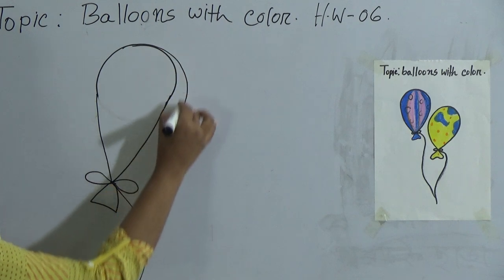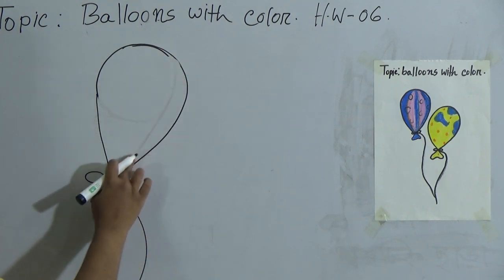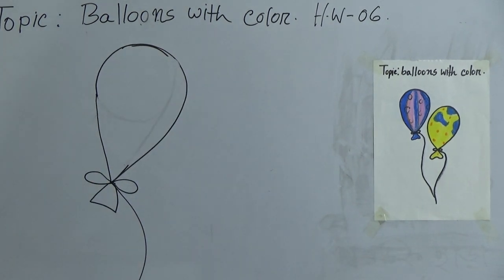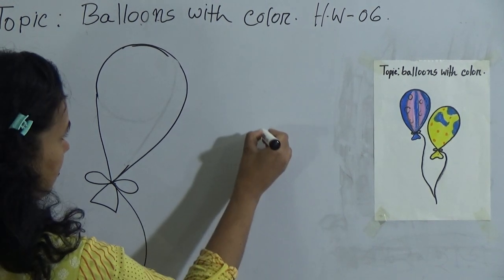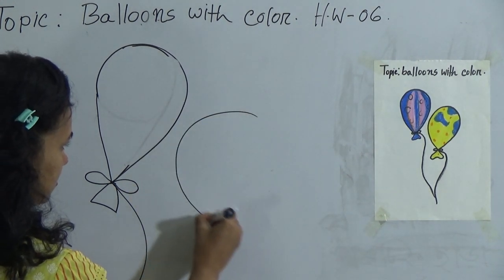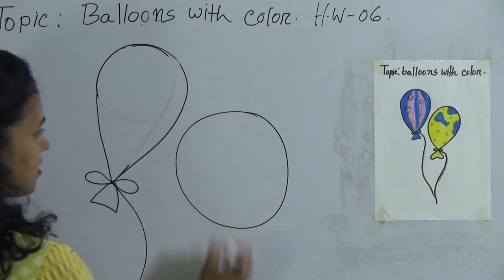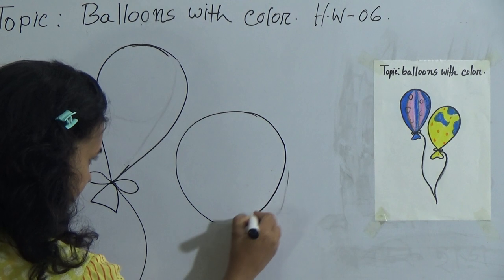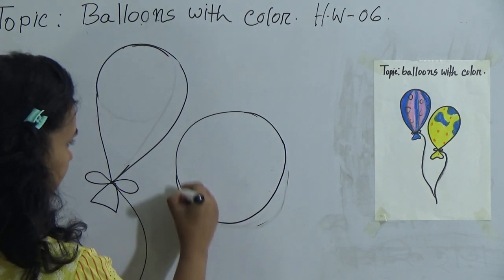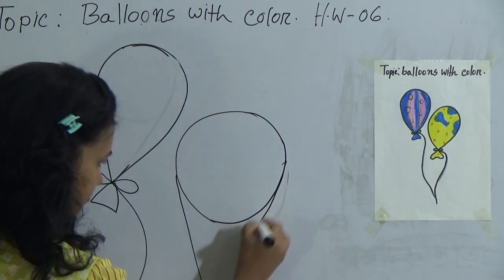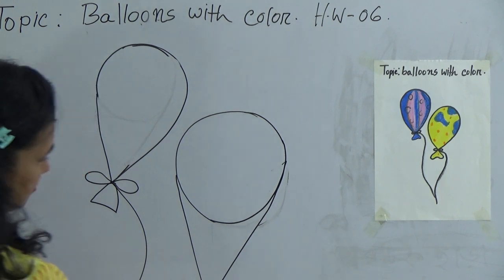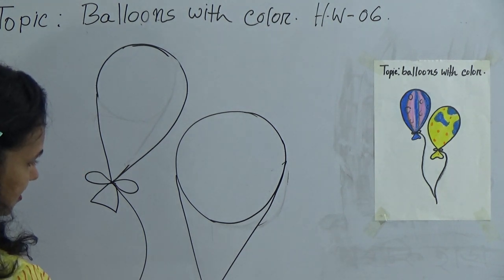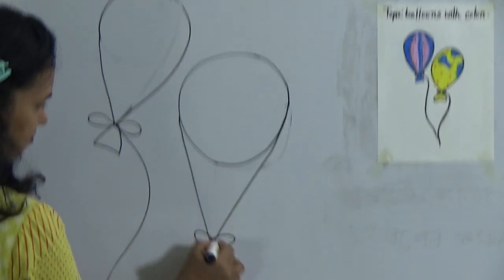Again, watch first. Draw a circle, then give a long V, and draw a tiny triangle. Then give this type of line.